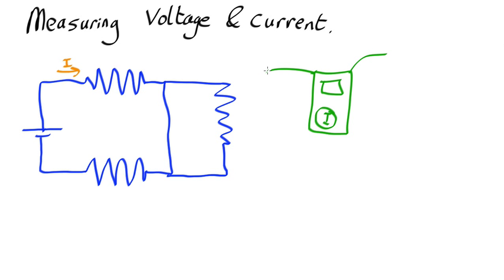So you might think what you would do is put one lead behind the resistor in question and one in front of it, so you're trying to measure the current through that resistor. But what's going to happen here?